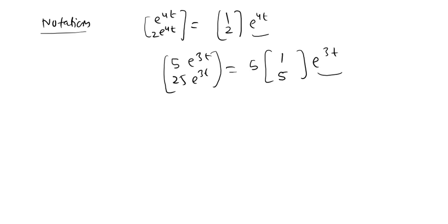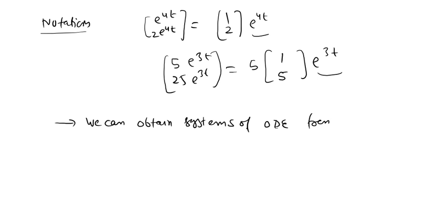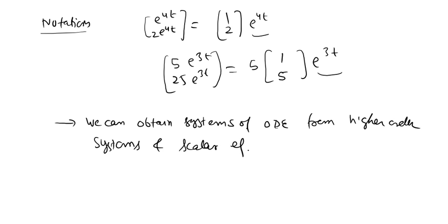In this way we can obtain systems of ODEs from higher-order systems and from scalar equations. In the next video lecture we will solve these systems; for simplicity we will take examples of 2 by 2 and 3 by 3 systems. Before that, we will recall topics from ODE such as the Wronskian and linear independence in the next class.